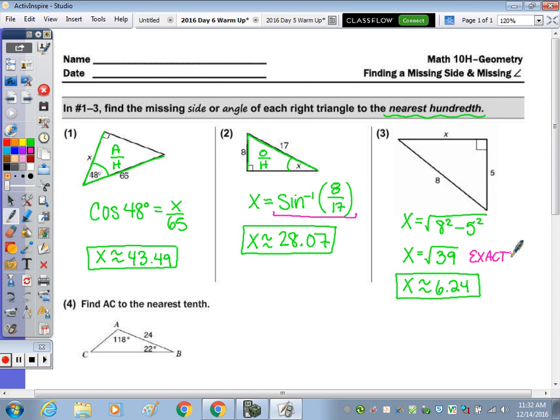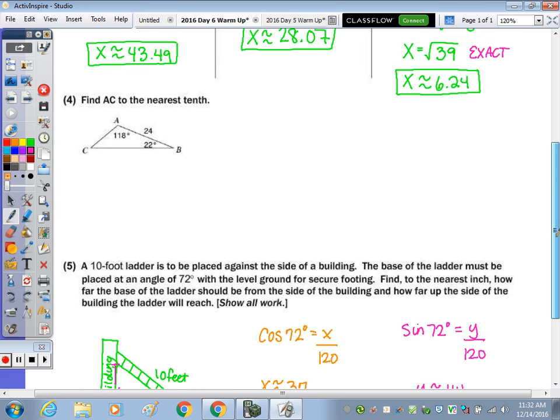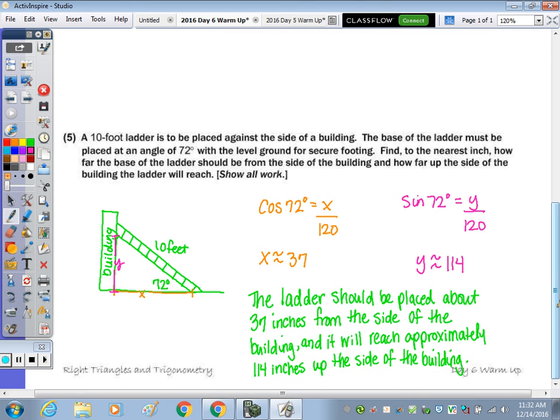I'm going to skip down to number 5 first, and then come back to number 4. Number 5, to find the distance to the nearest inch, how far the base of the ladder should be from the side of the building, that's x. And to do that, given the adjacent and hypotenuse, we're going to use cosine.